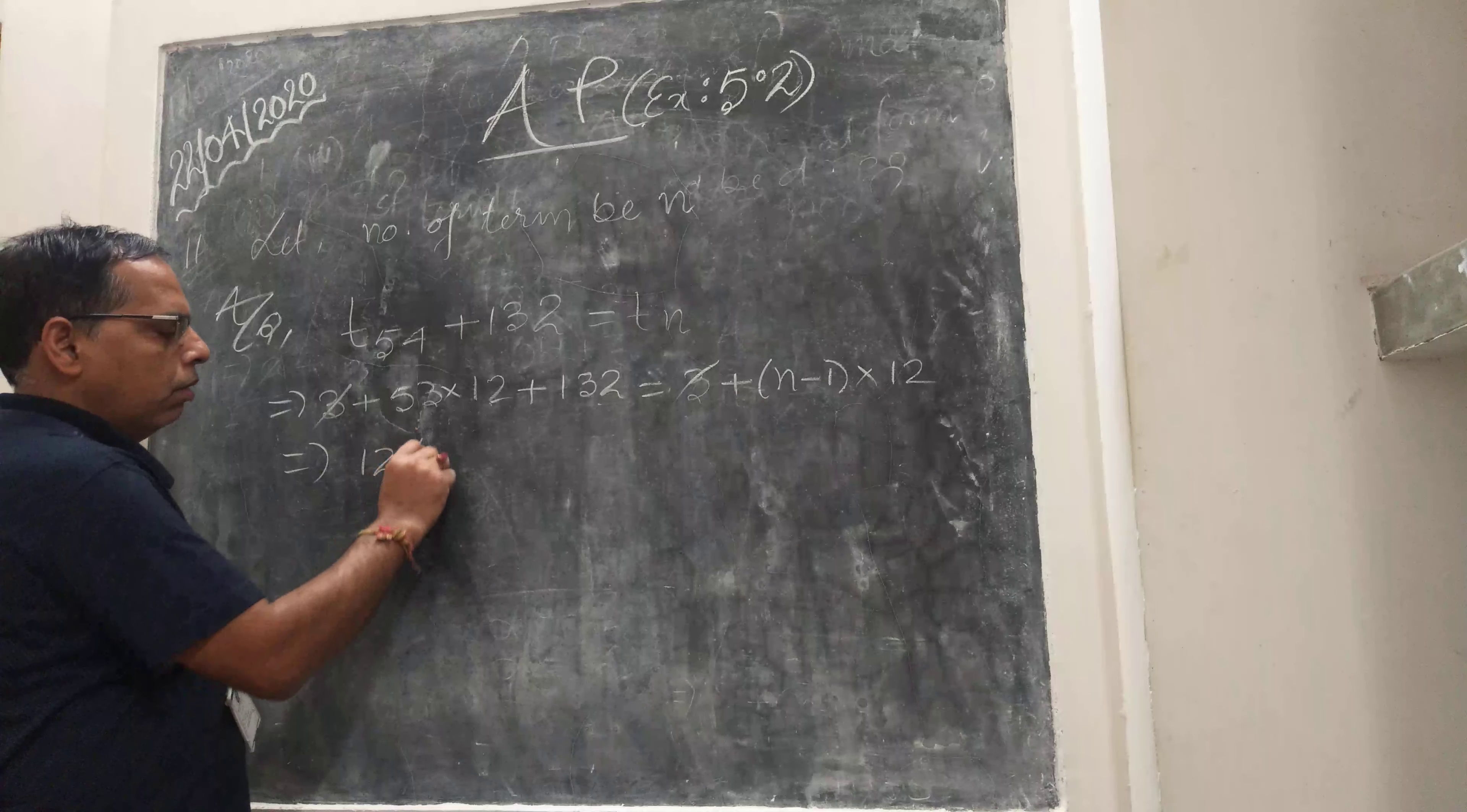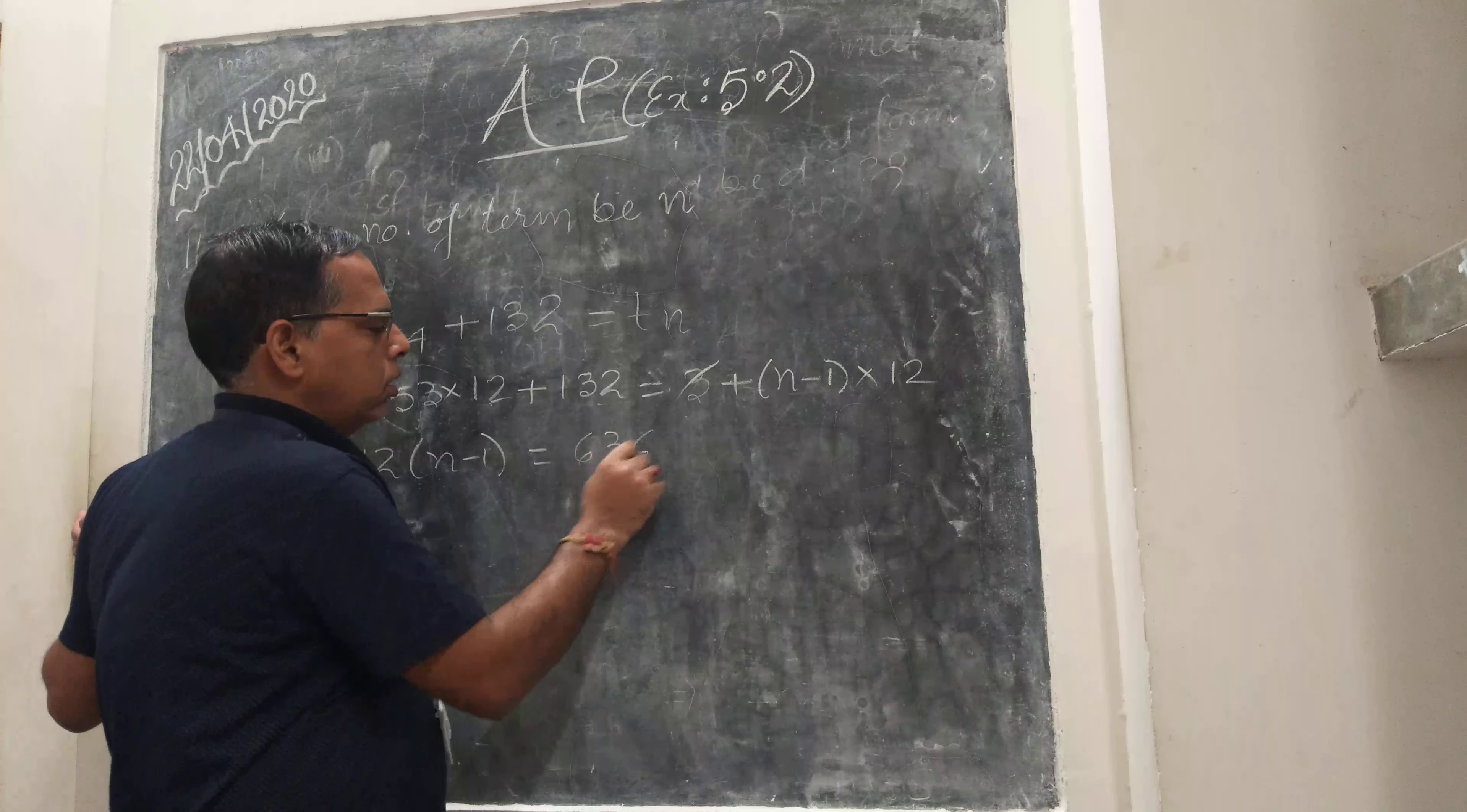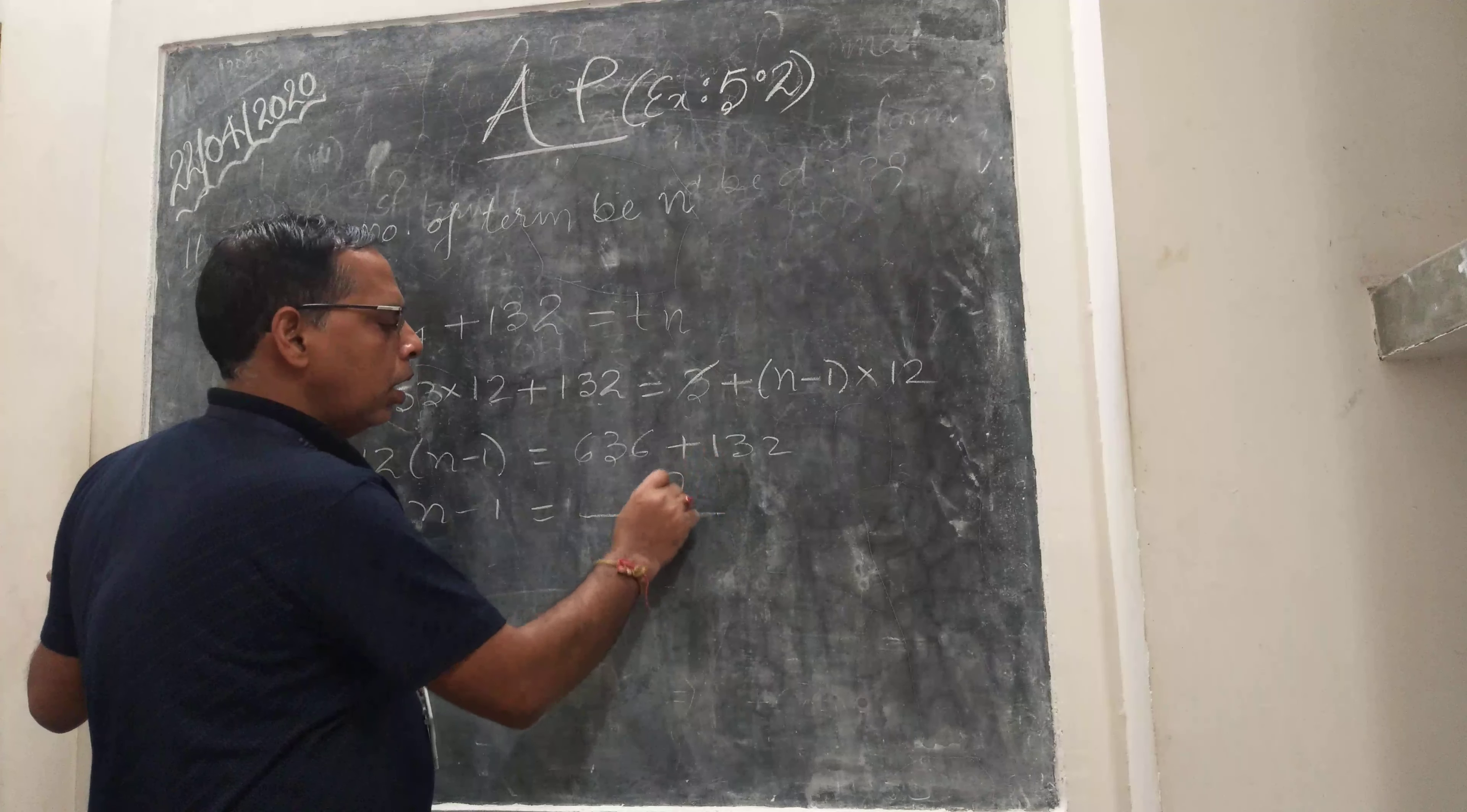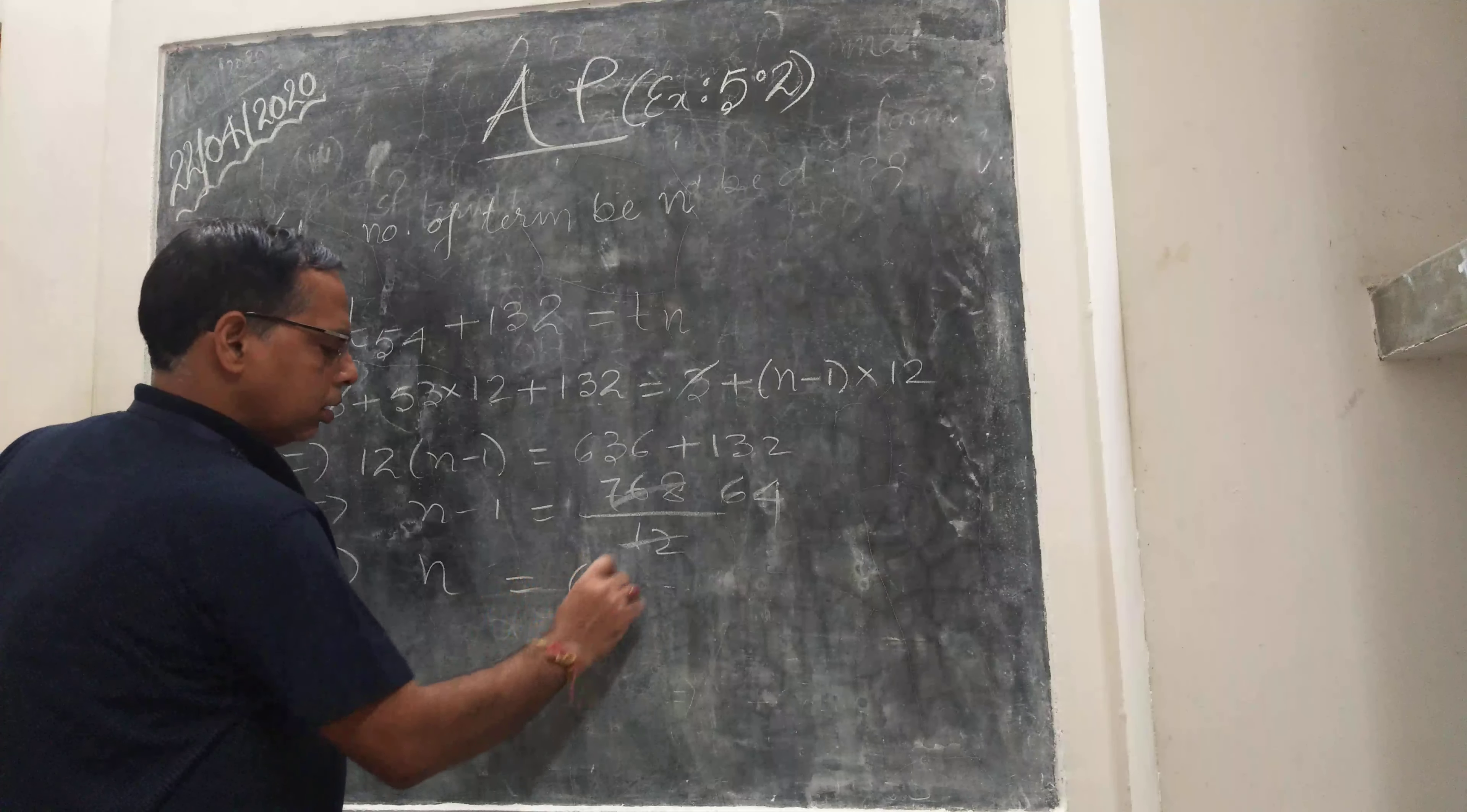Then 12(N minus 1) equals 636 plus 132. 63 plus 132 equals 195. So N minus 1 equals 195 divided by 12, which gives 16.25. Wait, let me recalculate. 867 divided by 12. So N minus 1 equals... N equals 61.